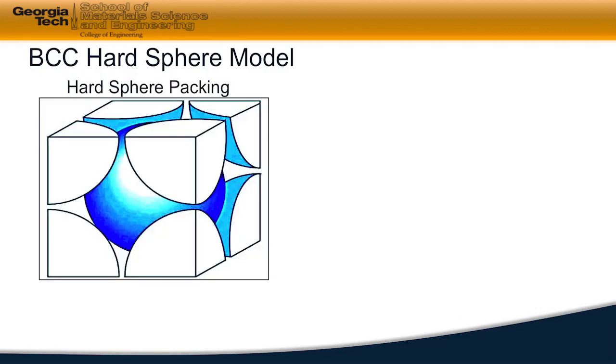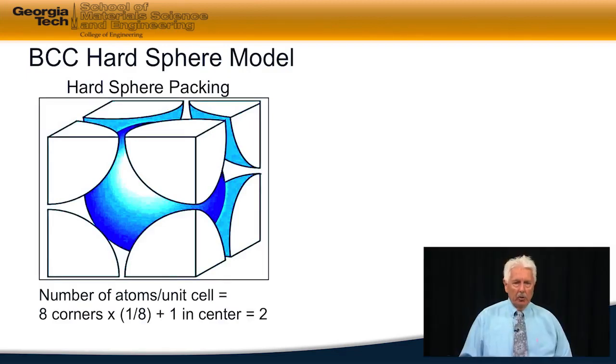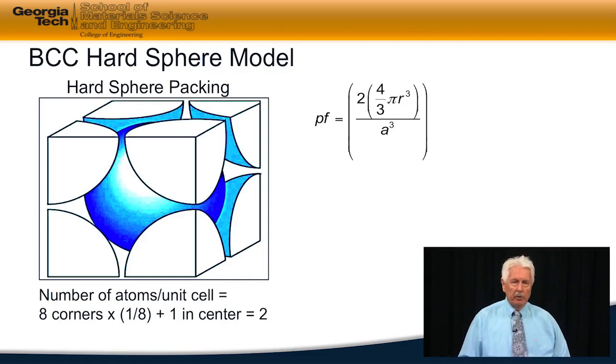When we do our hard sphere calculations in the body-centered cubic case, we have a total of two spheres that lie inside of this cube. What we would write for the packing factor is two spheres times the volume of each sphere, divided by the volume of the cube containing those two spheres.